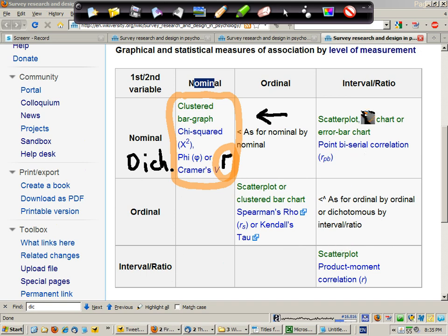And finally, if we have interval ratio type data by interval ratio type data, we can draw a scatterplot and get the bivariate Pearson product moment correlation.